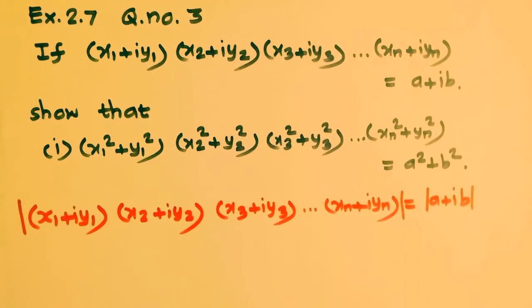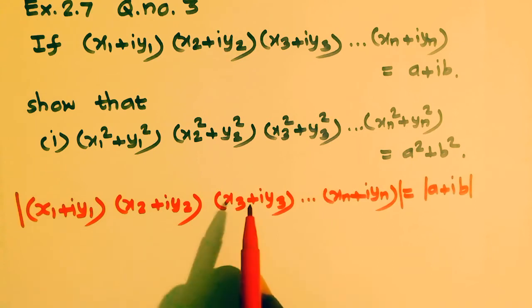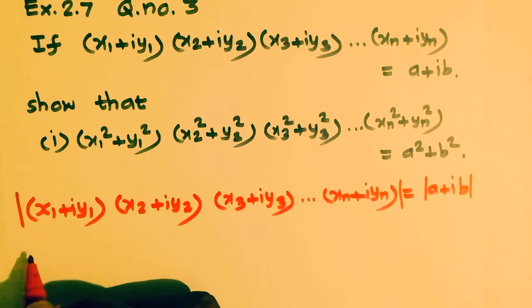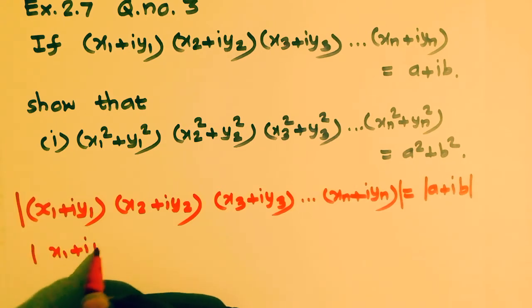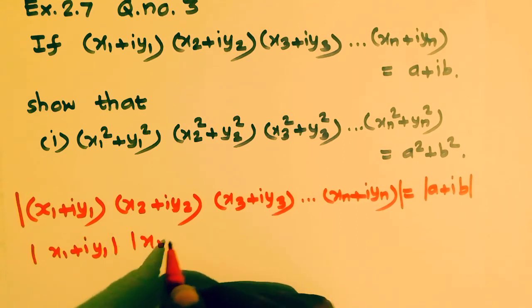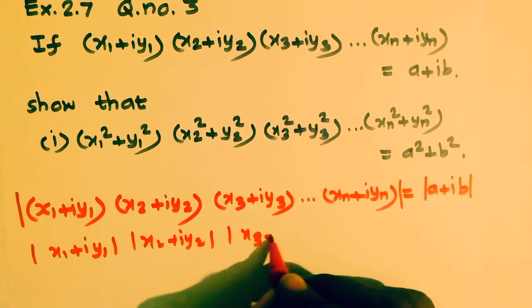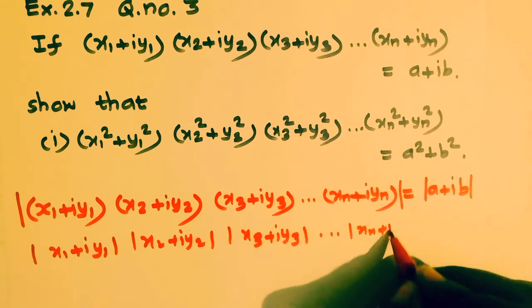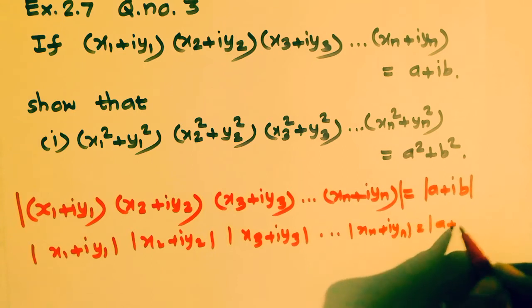Taking the modulus of both sides: modulus of z1·z2·z3·...·zn equals modulus of z1 into modulus of z2 and so on into modulus of zn. So modulus of (x1 + iy1) into modulus of (x2 + iy2) into modulus of (x3 + iy3) and so on into modulus of (xn + iyn) equals modulus of (a + ib).